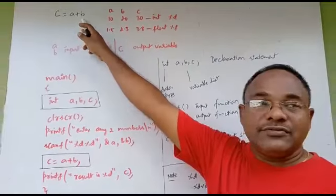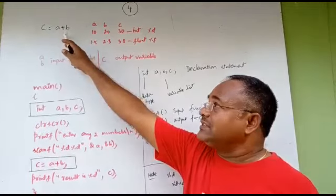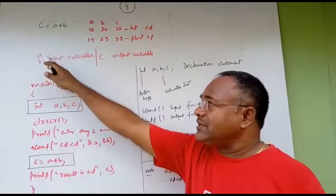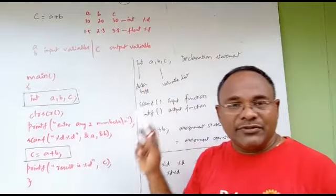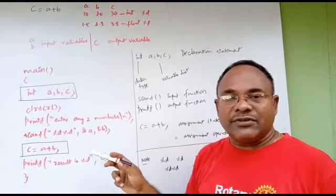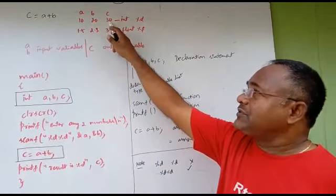So our first program: C equals A plus B, addition of any two numbers. A, B, and C are variables. A and B are input variables, and C is your output variable. The name of the variable can be anything. For our convenience, we're taking A, B, C. If A is 10 and B is 20, C must be 30.